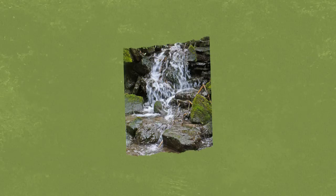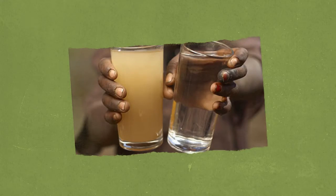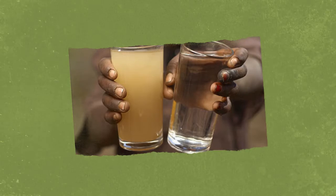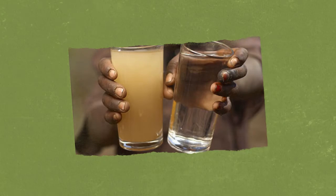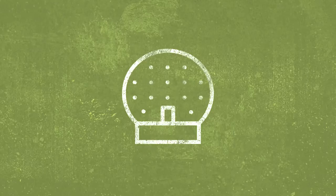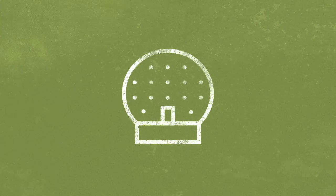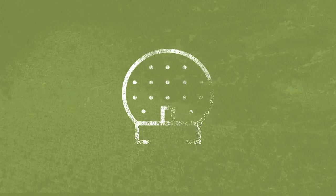Rivers transport material downstream in four different ways. They are solution, where minerals such as limestone and chalk are dissolved in the water. Suspension, where the finer sand and silt sized particles move through the flow.